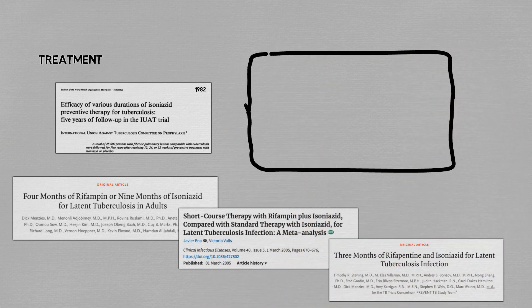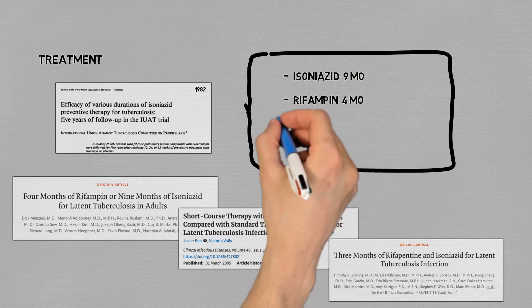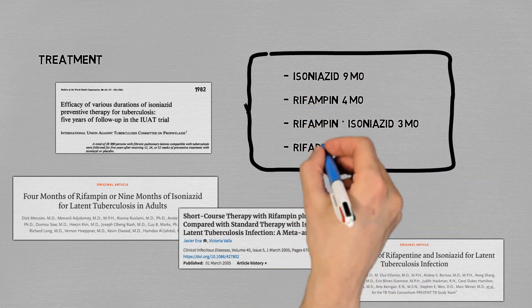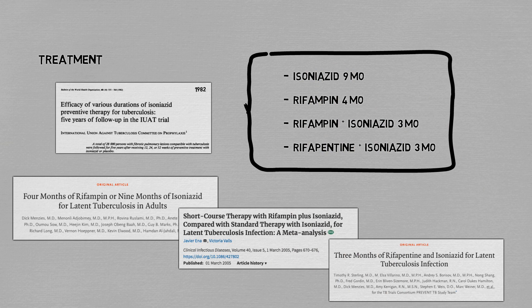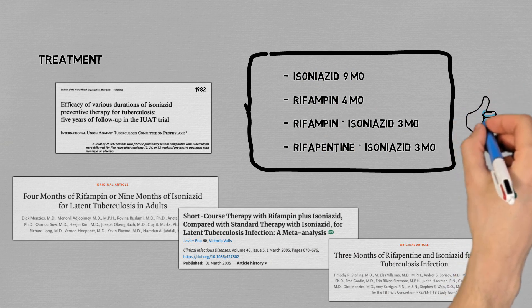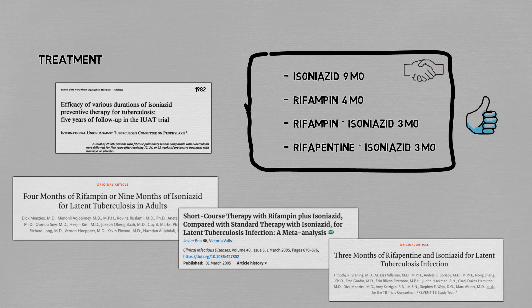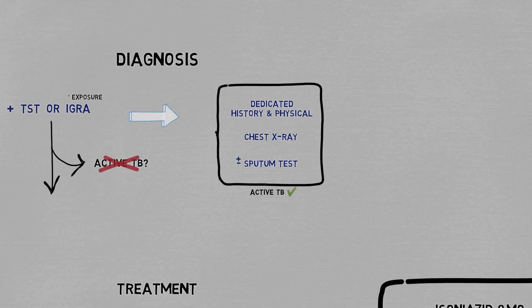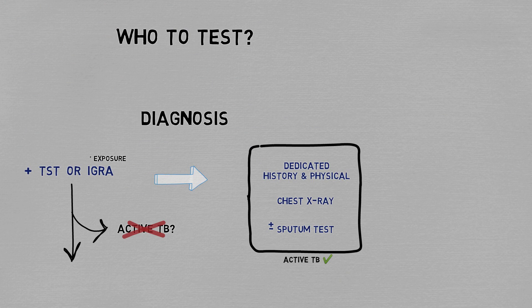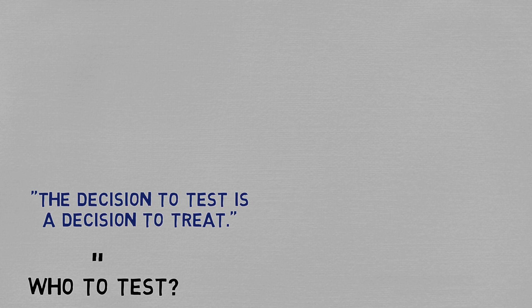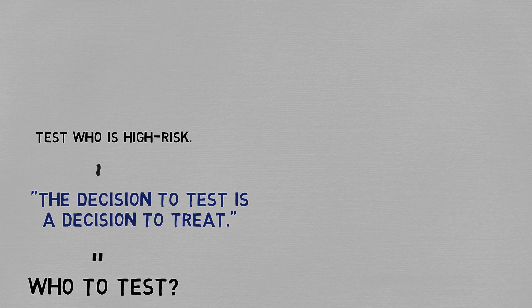So now we have the options of using isoniazid alone, rifamycin-based agents alone, or a combination of the two. Any of these options are acceptable, and the choice of regimen will usually come down to availability of resources and prescriber and patient preference. The last question is: who should be getting tested? A well-known guideline is that the decision to test is a decision to treat, which means that people who have low risks of progressing to active TB, or who are unlikely to have been exposed to TB, shouldn't even be tested at all.